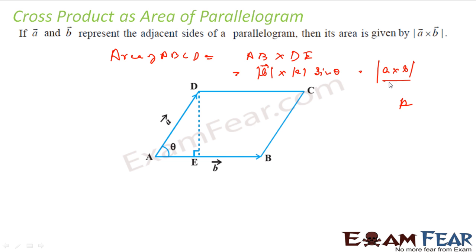Very easy — just understand that. You have two vectors A and B. The magnitude of A×B will be the area of the parallelogram, and half of the magnitude of A×B will be the area of the triangle. You don't even need to memorize this — you can just derive it whenever required.